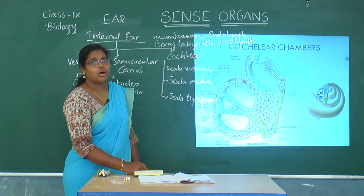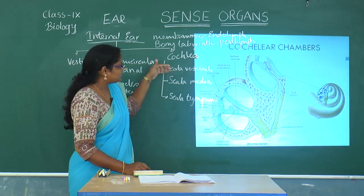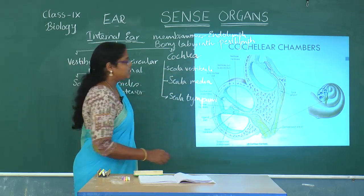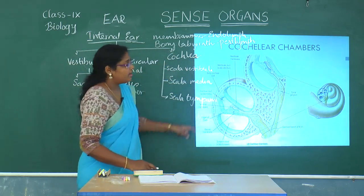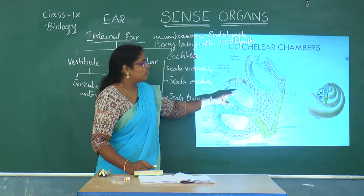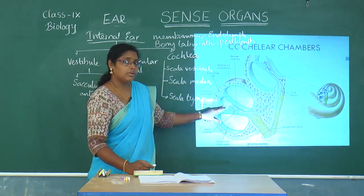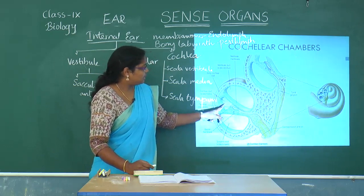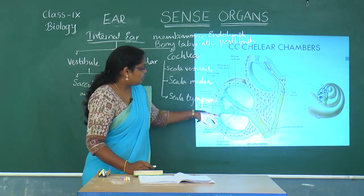These chambers are formed by membranes. The membrane separating scala vestibuli and scala media is the vestibular membrane, and the membrane separating scala media and scala tympani is the basilar membrane.